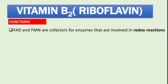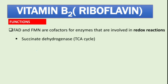The first main function involves succinate dehydrogenase, an enzyme found in the tricarboxylic acid cycle, or Krebs cycle. This enzyme is also found in the electron transport chain, where it is known as complex three.